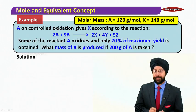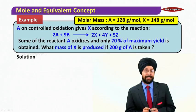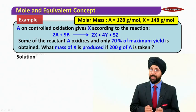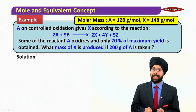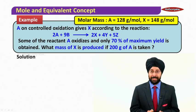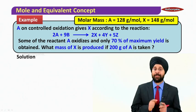Now let us take an example for this. A on controlled oxidation gives X according to the reaction. Some of the reactant A oxidizes and only 70% of maximum yield is obtained.